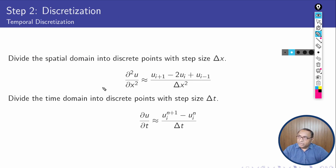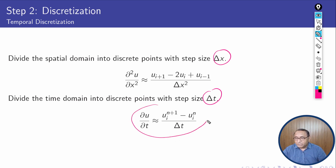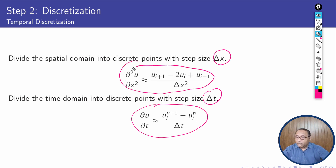In this partial differential equation we will discretize the domains. First, we divide the spatial domain into discrete points with step size Δx. According to the definitions discussed in the previous lecture, ∂²u/∂x² will be approximated as (u_{i+1} - 2u_i + u_{i-1}) / Δx². The time domain is also divided into discrete points with step size Δt, using the forward finite difference scheme and the central finite difference scheme.